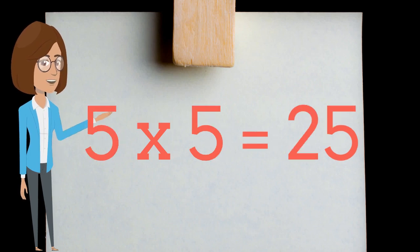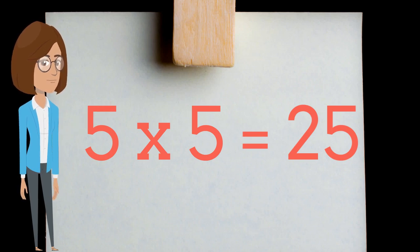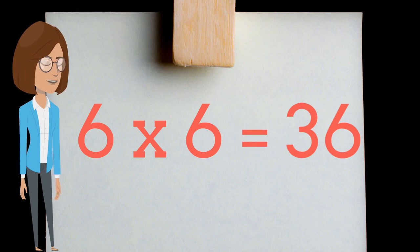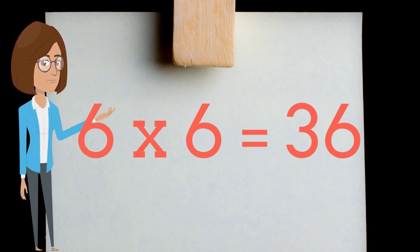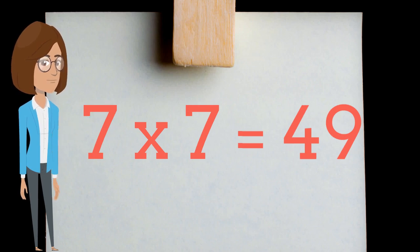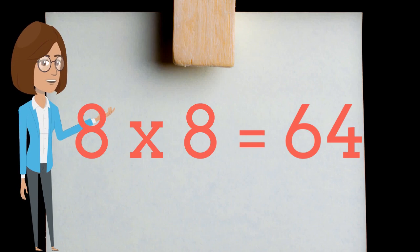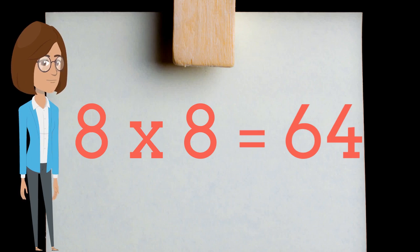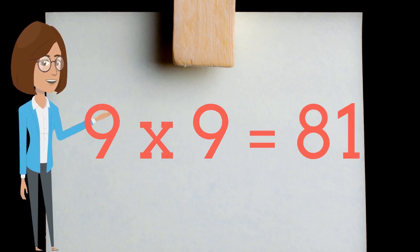Five times five is twenty-five. Six times six is thirty-six. Seven times seven is forty-nine. Eight times eight is sixty-four. Nine times nine is eighty-one.